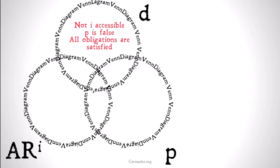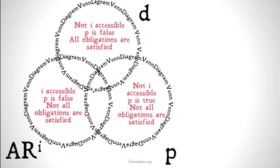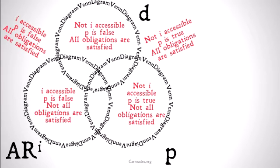In the non-overlap area of the D circle, we have worlds that are not I-accessible, where P is false, but all obligations are satisfied. In the non-overlap area of the P circle, we have worlds that are not I-accessible, P is true, and not all obligations are satisfied. In the non-overlap area of the ARI circle, we have worlds that are I-accessible, P is false, and not all obligations are satisfied. In the overlap area between D and ARI, we have worlds that are I-accessible, P is false, and all obligations are satisfied. In the overlap area between D and P, we have worlds that are not I-accessible, P is true, and all obligations are satisfied.